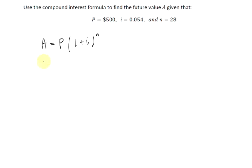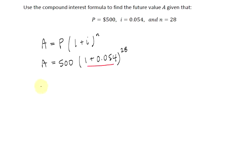I'll start by writing A equals — since A is the value we're trying to find, I'll leave that as A. P equals 500, so I'll substitute 500 for P. In parentheses I have 1 plus I, where I is given to be 0.054, and N equals 28 so my exponent is 28. I'm going to simplify the right side following the order of operations, working one step at a time. First, I simplify what's in parentheses: 1 plus 0.054 equals 1.054, raised to the 28th power.